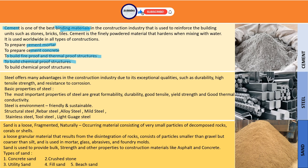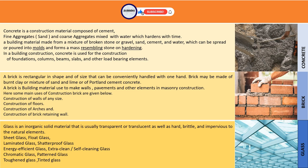Steel has many advantages due to exceptional qualities like durability, high tensile strength, resistance, and corrosion resistance. Steel is also environment-friendly and sustainable. Types include stainless steel, tool steel, and light wash steel. Sand is a naturally occurring fragmented material consisting of very small particles of decomposed rocks, corals, or shells, and comes in various types.